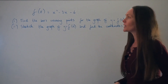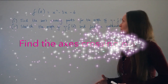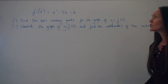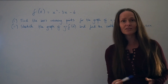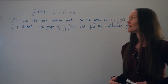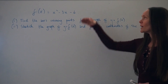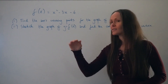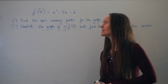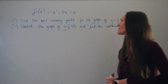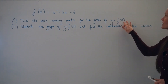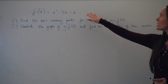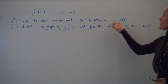In part 1, we're going to find the axis crossing points for the graph of y = f(x). When it says find the axis crossing points, all it means is work out where your graph intersects the y-axis and the x-axis — the coordinates of those intersection points. So we're going to write our function f(x) but put it equal to y.